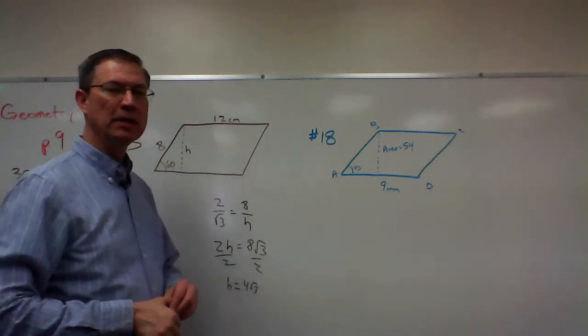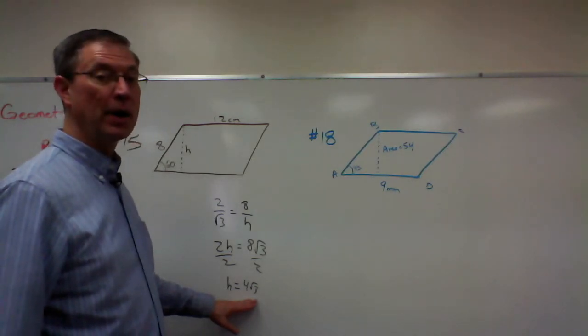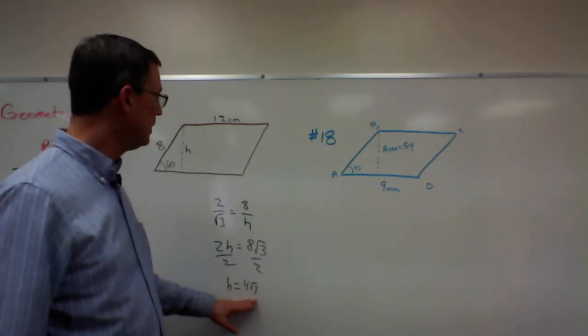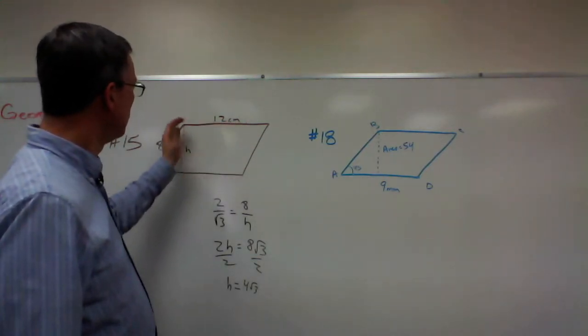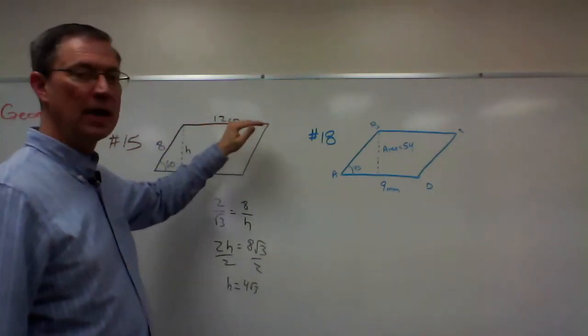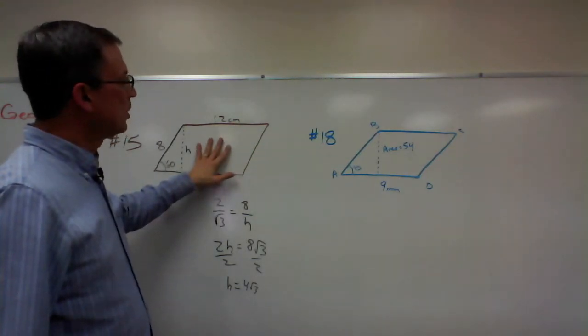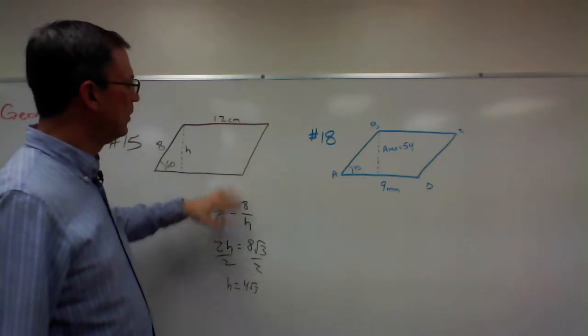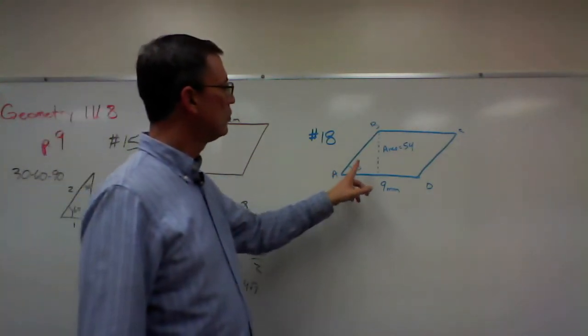I'm going to stop there because I want you to use your calculator. You're actually going to get a decimal approximation for the square root of 3, multiply it times 4, and then once you know that, you can multiply times the length and you will have the area. Let's talk about number 18. 17, by the way, is similar to this, just different numbers. 18 is a little trickier.